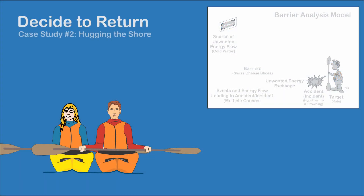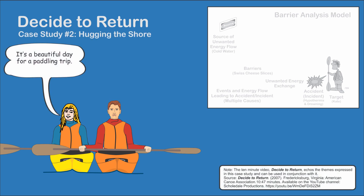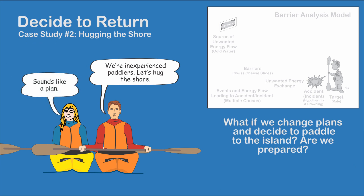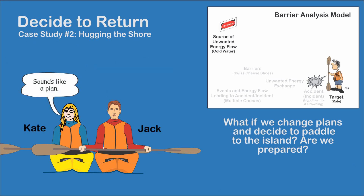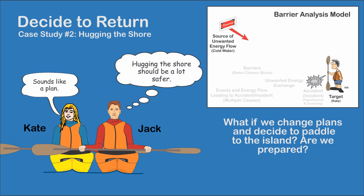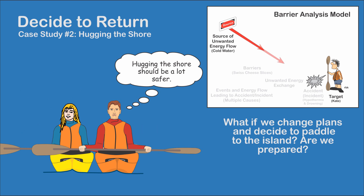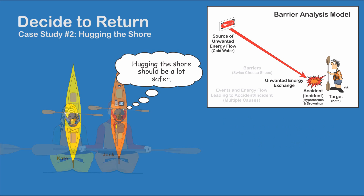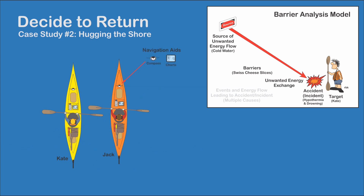Barrier analysis plays a role in pre-trip planning and in the small decisions and non-decisions that can culminate in an accident. "Decide to Return" is a video of a day's outing where a series of decisions made by Cade and Jack eventually results in them becoming fatigued, capsizing, and hypothermic in cold water. The primary unwanted source of energy is from the cold water. Given their inexperience, they planned to hug the shore, which meant they could get by without navigational aids such as charts and compass. Self-rescue was an easy swim to shore.